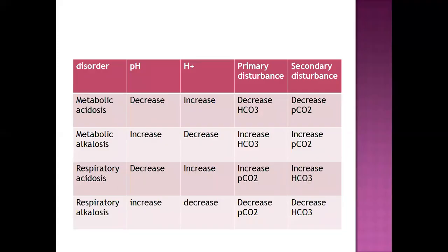Result analysis is done in terms of respiratory acidosis and alkalosis. In respiratory acidosis, pH is decreased, whereas in respiratory alkalosis, pH is increased. H⁺ values increase in respiratory acidosis and decrease in alkalosis. Bicarbonate and pressure of carbon dioxide either increase or decrease as primary and secondary disturbances.